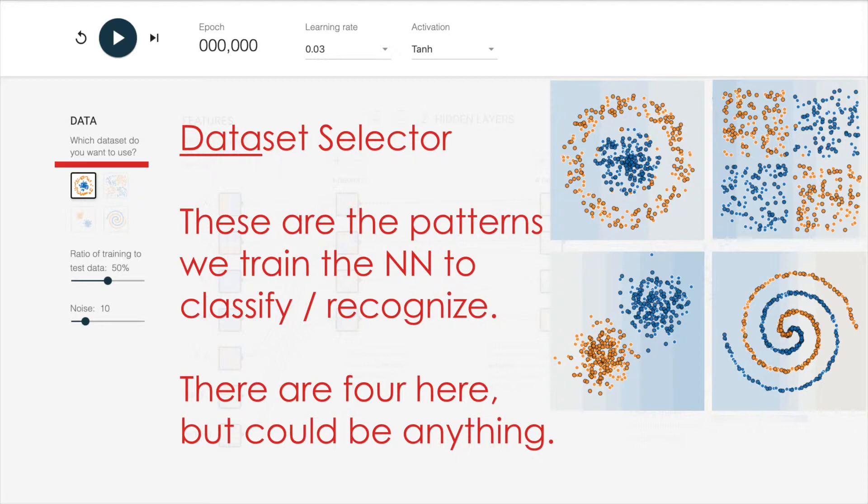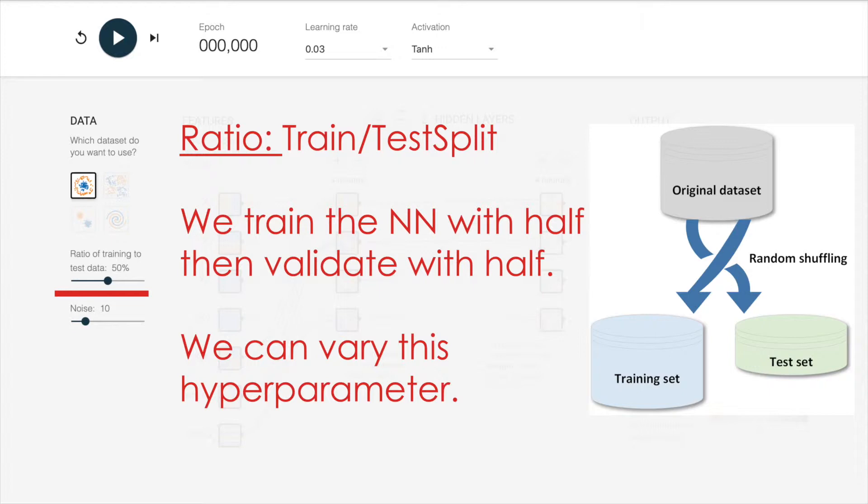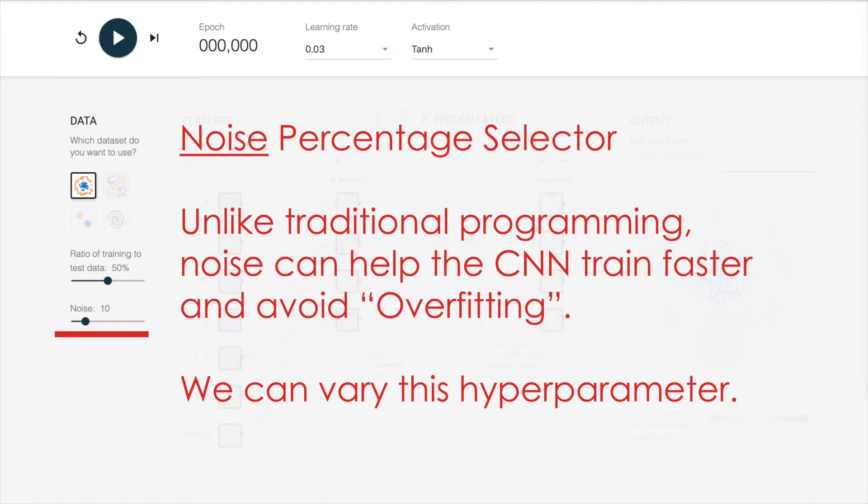The next control we see on the left is this ratio of training data to test data. And in these examples, we're going to be using an even test-train split. Half of our data will be used to train the model, and half of the data will be used to validate the model. And this is also a hyperparameter. By varying the ratio of training to test data, you can get different outcomes.